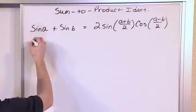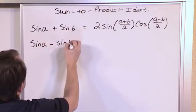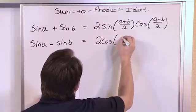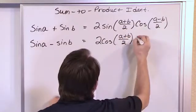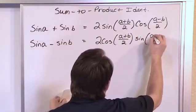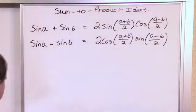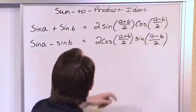So you'll see some symmetry here. Sine of A minus sine of B is equal to 2 times the cosine of A plus B over 2 times the sine of A minus B over 2. So the only real difference between these two is that this sine changed to a cosine and this cosine changed to a sine.